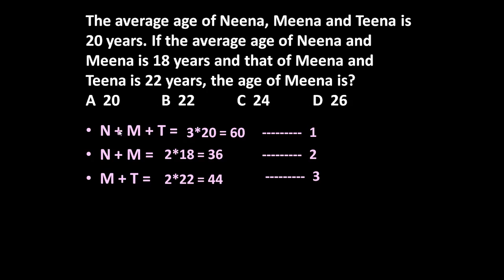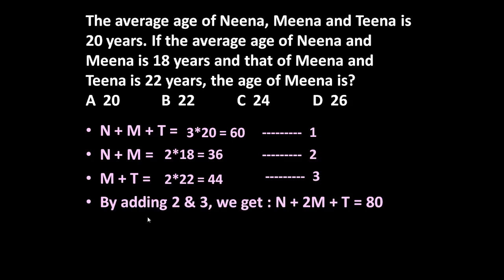For equations 1, 2 and 3, we now have to determine the age of Mina. If we add equation number 2 and 3, we get Nina plus 2M plus Tina is equal to 80. So N plus 2M plus T is equal to 80. Now if you see equation number 1, N plus M plus T is equal to 60.